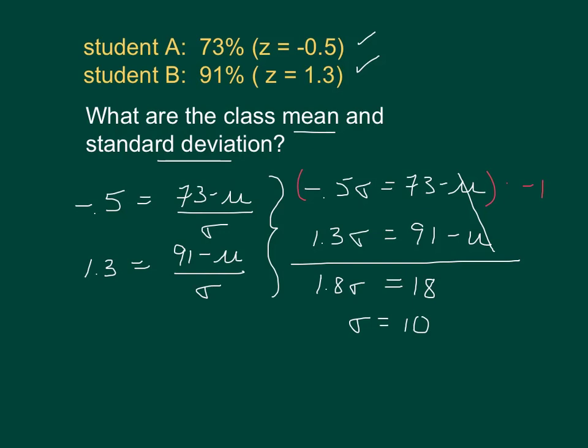If our standard deviation is 10, then I can put it back into either equation here. And when I do that, I will figure out that mu is 78.